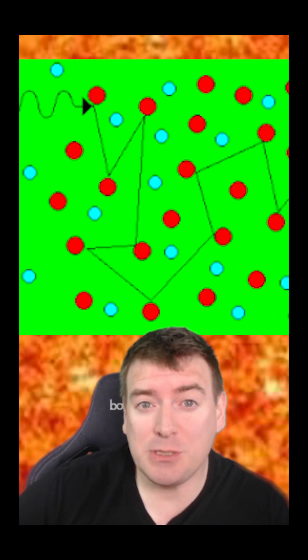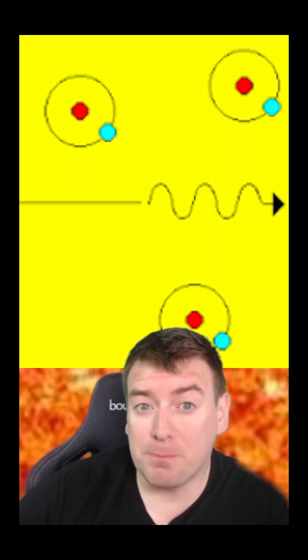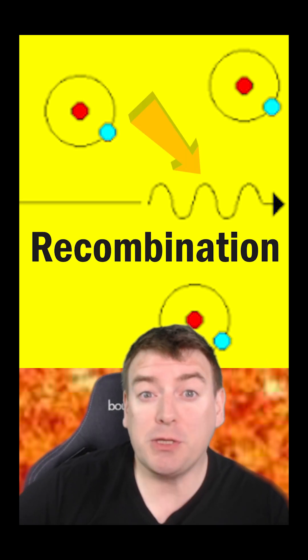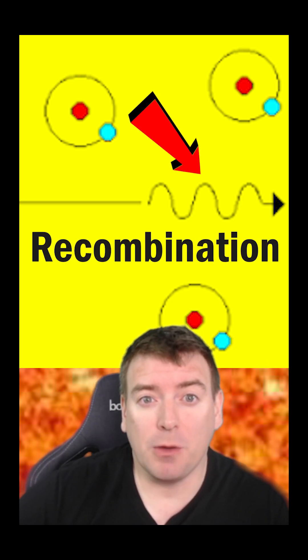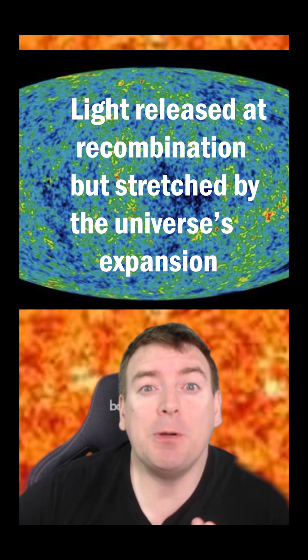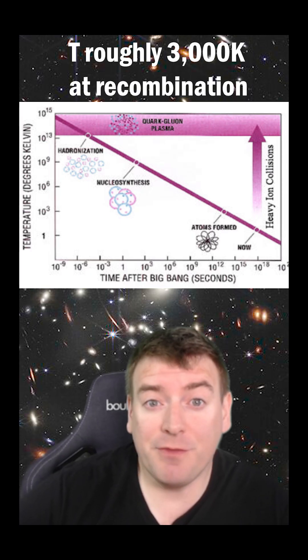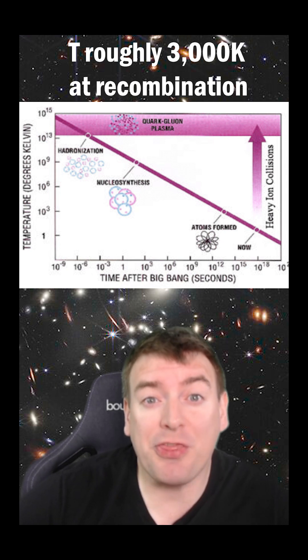However, around 380,000 years after the Big Bang, electrons and protons started to bind together to form the first atoms. The photons bouncing around inside the plasma were suddenly free to propagate and produce the cosmic microwave background that we detect today. The temperature of the universe at recombination was about 3,000 Kelvin.